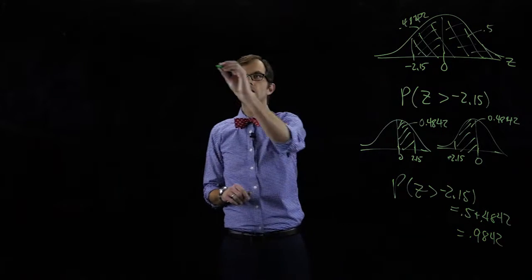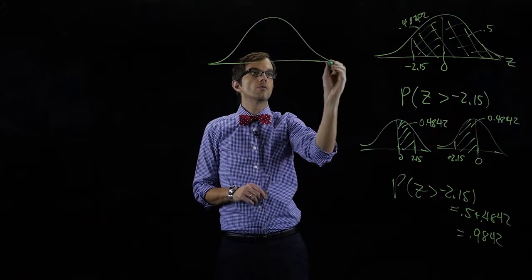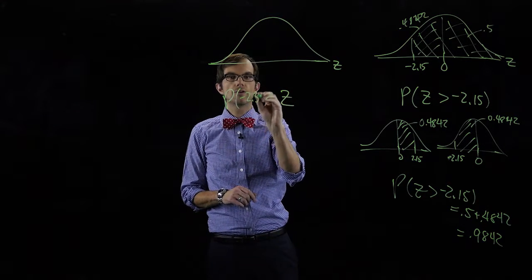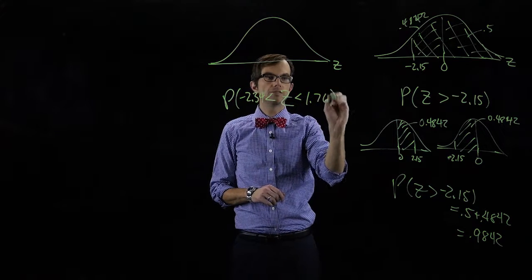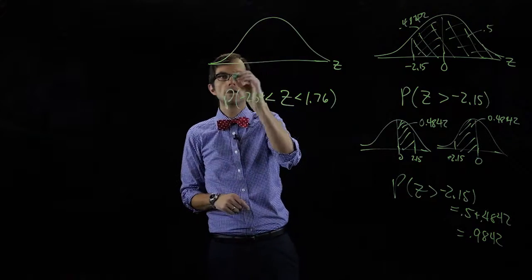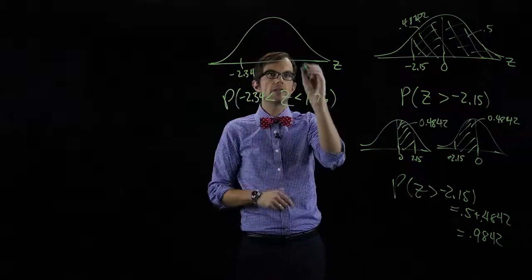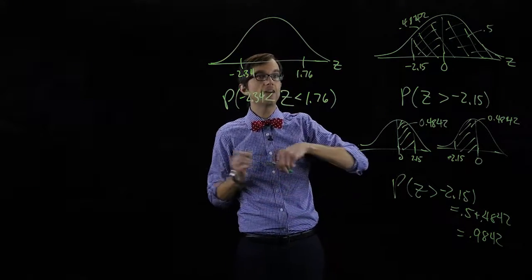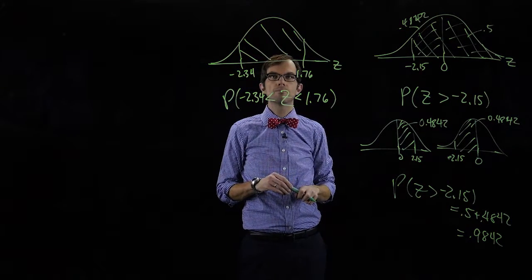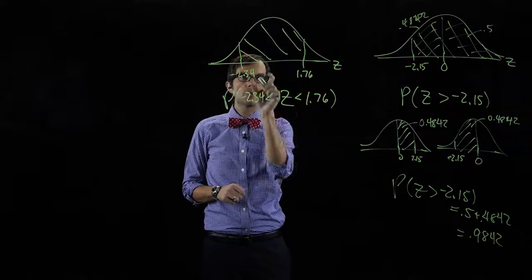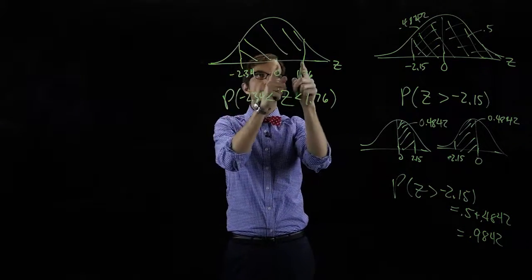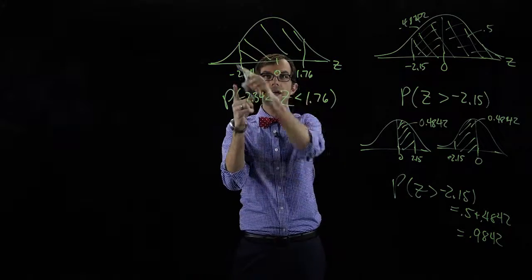Let's take a look at another example. For this z distribution, what's the probability that z is between negative two point three four and one point seven six? What's the probability that z is greater than negative two point three four and less than one point seven six? This is the area that we want. We know that if we look up the probability on each side of zero and add those two together, we'll get that entire probability.